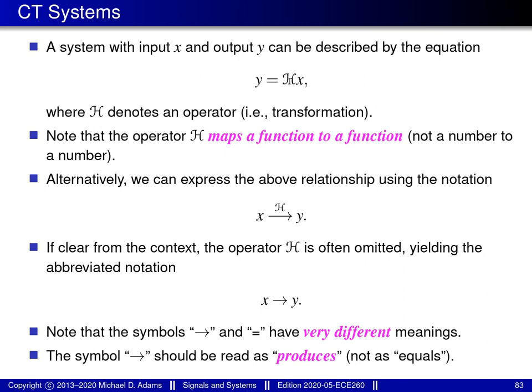Instead of using operator notation like in this equation, we can also use arrow notation. The thing on the left of the arrow is the input to the system, the thing on the right is the output, and the symbol above the arrow indicates which system we're talking about. So we're putting the input x into the system H and this produces the output y.